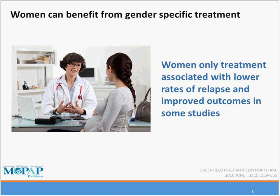The main point about sex and gender differences is that all data on gender-specific treatment suggests women can benefit from treatment that specifically addresses women's needs. Women-only treatment has been associated with lower rates of relapse and improved outcomes in some studies, though programs are heterogeneous and difficult to study broadly. Other versions of women-specific treatment include integrated child care, integrated prenatal care, and integrated HIV care in mixed-gender settings — all of which, when studied, have shown improvements in retention in treatment and time to relapse.